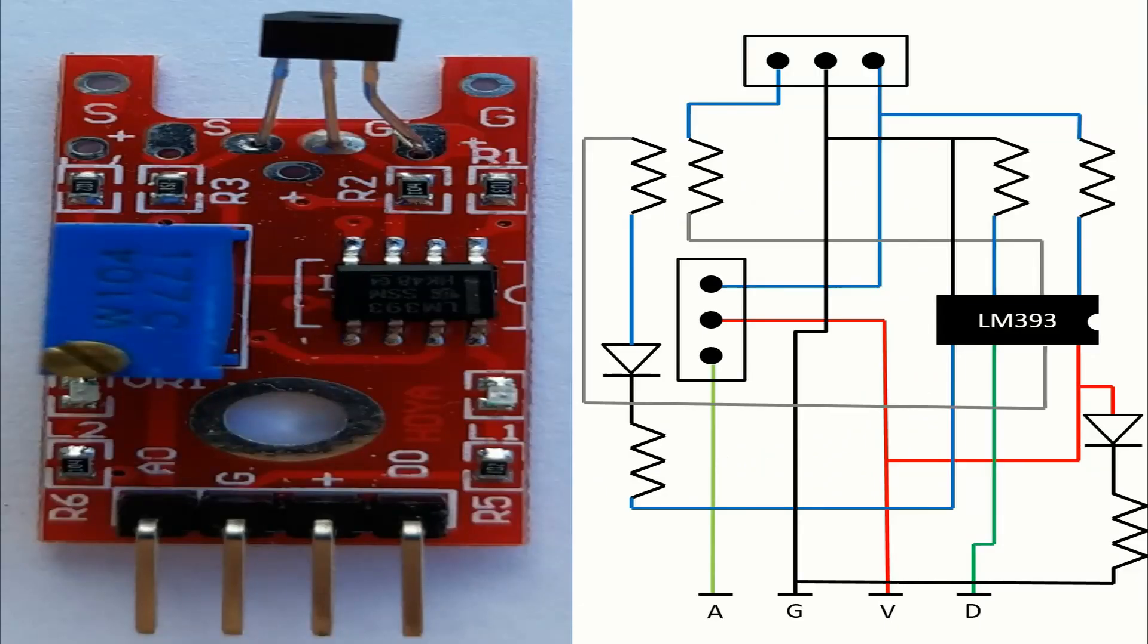This module has integrated on board one magnetic hall sensor, one potentiometer, one microchip, six resistors and two LEDs.